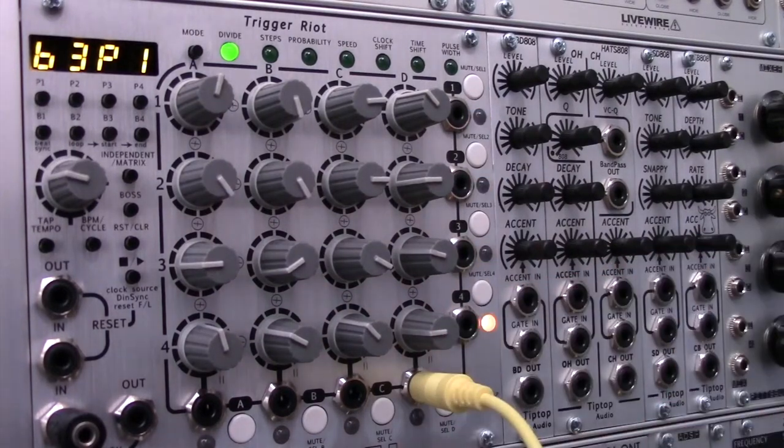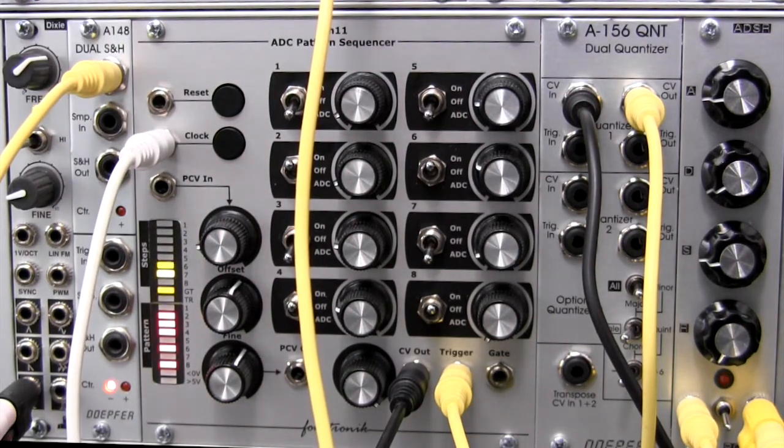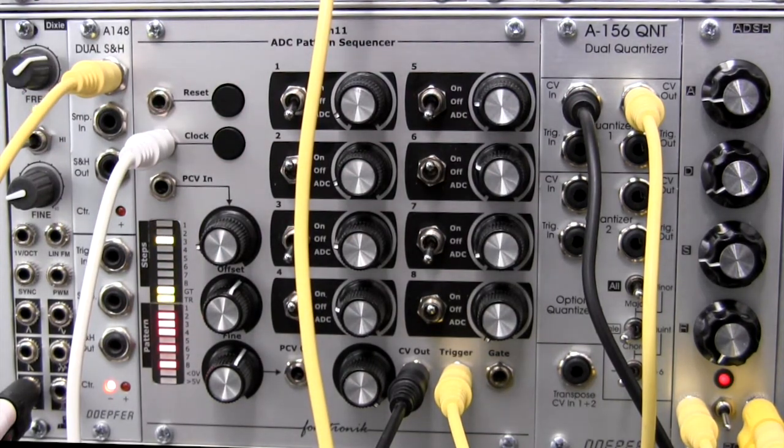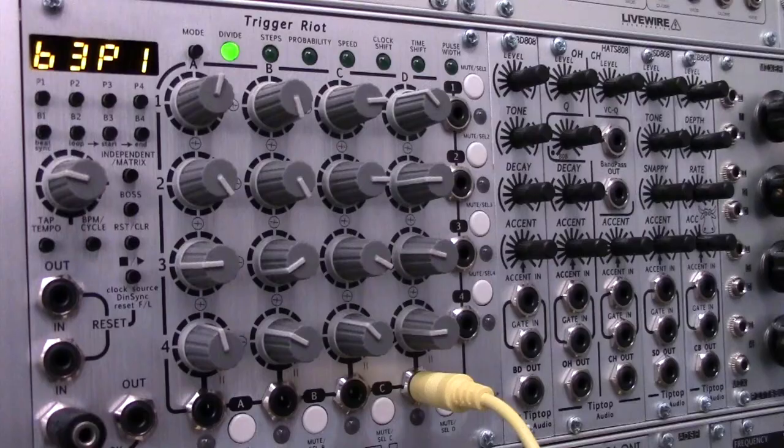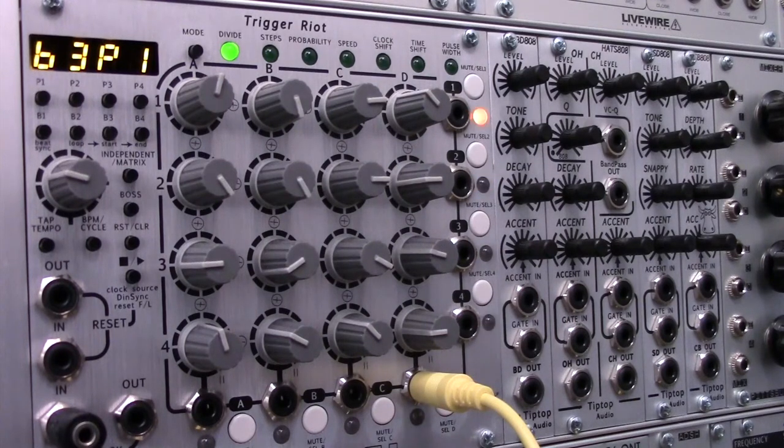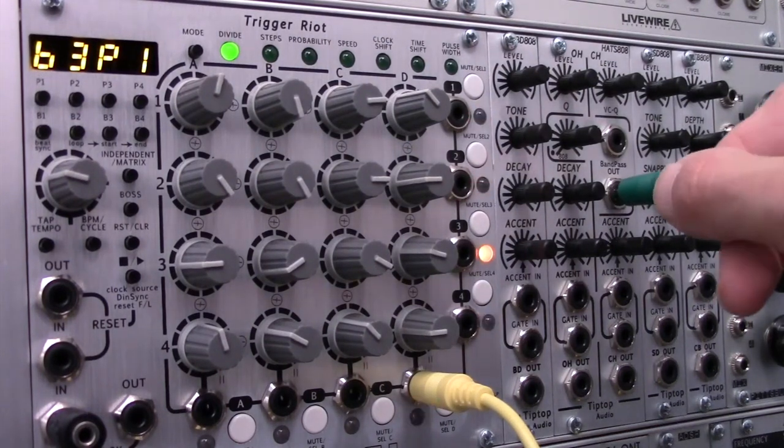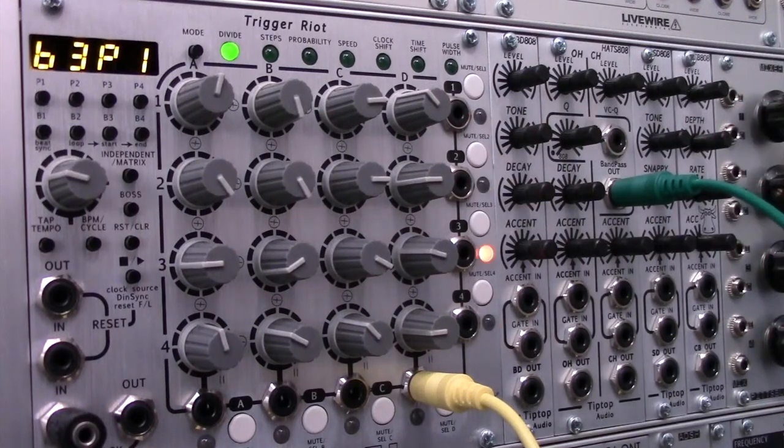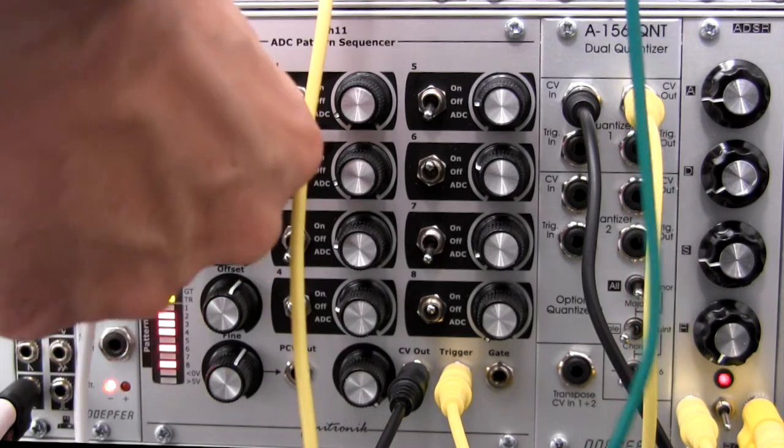I'm going to use that trigger to fire a sample and hold. So I'm going to take an output from there, patch it into the trigger end of the sample and hold. And now I need something to patch into the sampling part of the sample and hold. So what I'd like to use is some noise. If I go up a couple modules from the trigger riot, I have this band pass out right here that actually outputs noise. I'm going to use some of this noise and sample that.